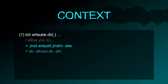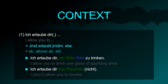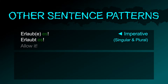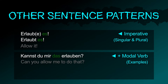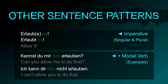Context — simply add what you're allowing somebody to do: ich erlaube dir ein Glas Sekt zu trinken. Ich erlaube dir das Rauchen nicht. Imperative: erlaube es, erlaubt es.